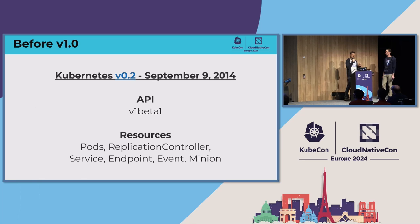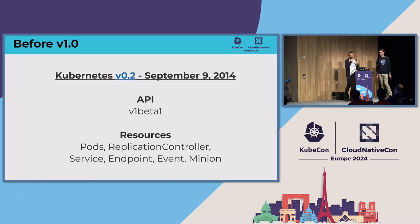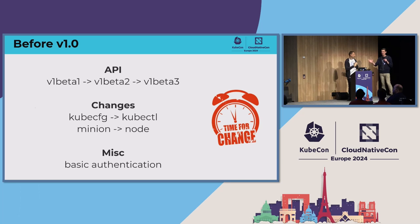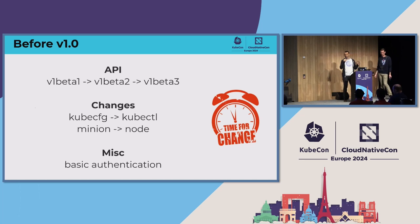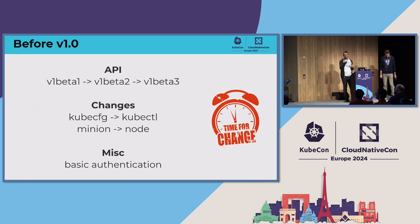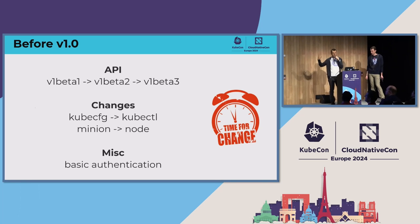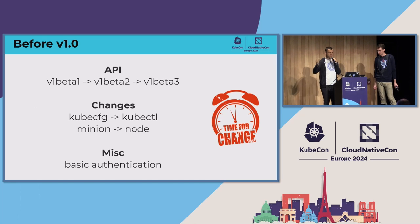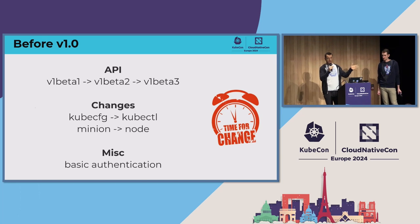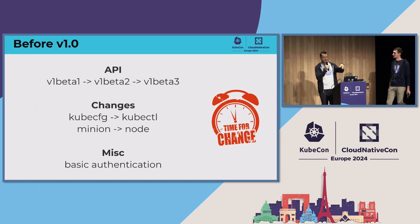Replication Controller is like ReplicaSet — it was renamed with some slight changes. It still exists because it was GA'd back in 2015, so we will not remove it. Minion was changed right before 1.0. Does anyone know what Minion is called now? It's Node. There was a lot of changes, a lot of turmoil — PRs were flagged, crazy merges, everything. You literally had to rebase your PRs every 30 minutes before 1.0. There were releases every single month, more or less.